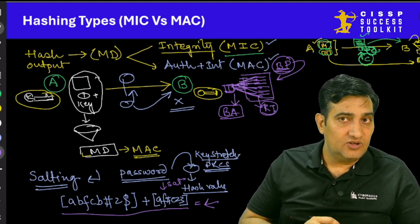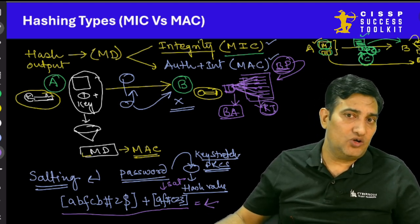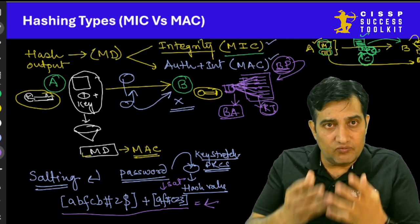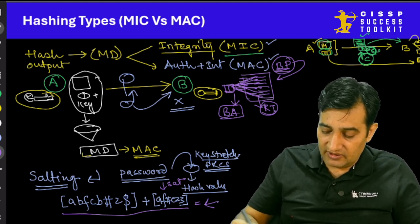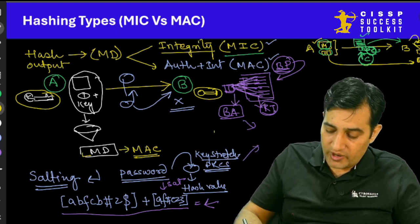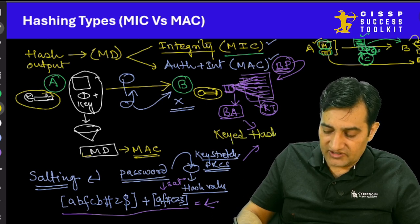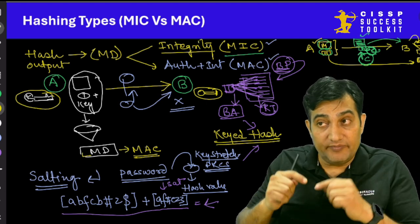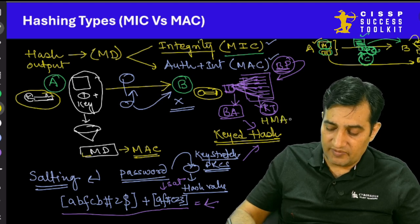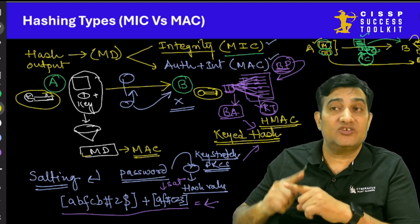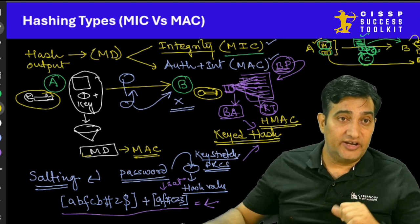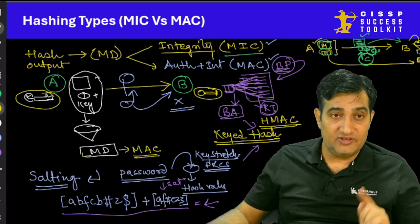In CISSP exam terminology, the combination of a key mixed with a hash is sometimes referred to as a keyed hash. One of the primary algorithms that makes use of a keyed hash is HMAC — Hashed MAC, also called Hashed Message Authentication Code. That covers all the core concepts related to hashing. I hope you found it useful and I'll see you in the next video.